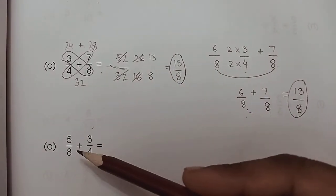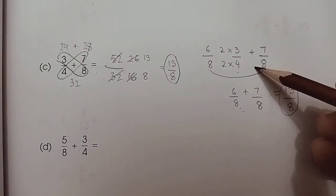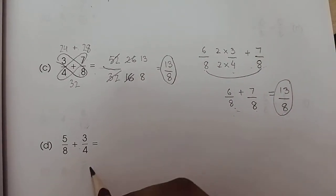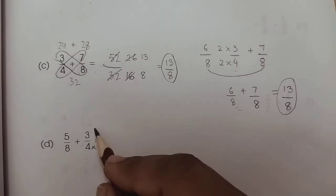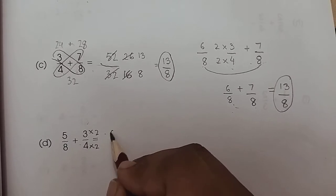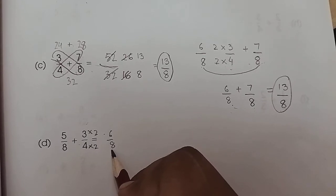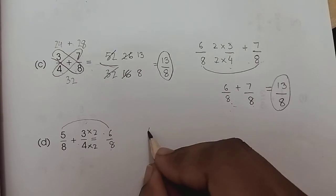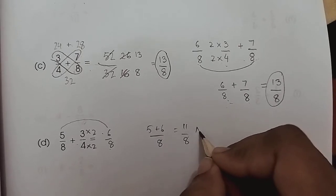Here we have the same situation again — denominators 8 and 4. I'll use method two since it seems easier. I'm going to make the 4 into 8 by multiplying by 2, and also multiply the numerator by 2, giving us 6 upon 8. Now both fractions have the same denominator. Adding the numerators: 5 plus 6 upon 8 gives us 11 upon 8. That is the answer.